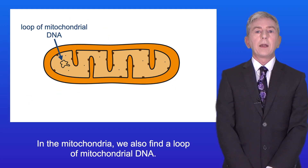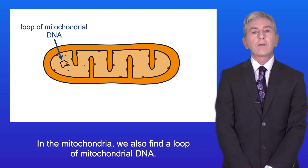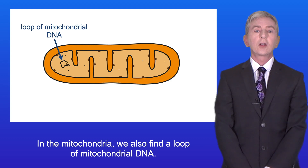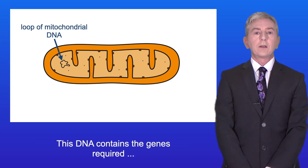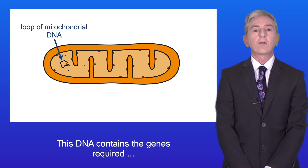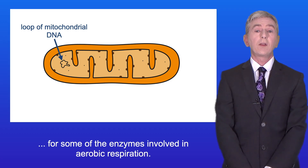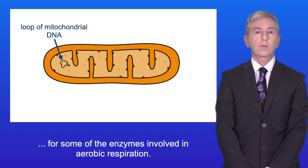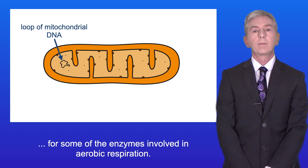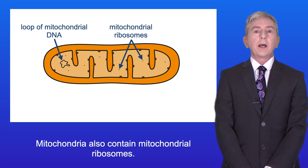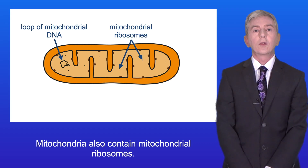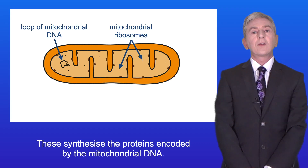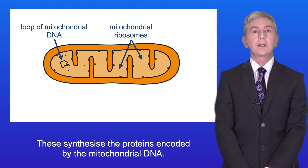In the mitochondria we also find a loop of mitochondrial DNA. This DNA contains the genes required for some of the enzymes involved in aerobic respiration. Mitochondria also contain mitochondrial ribosomes and these synthesize the proteins encoded by the mitochondrial DNA.